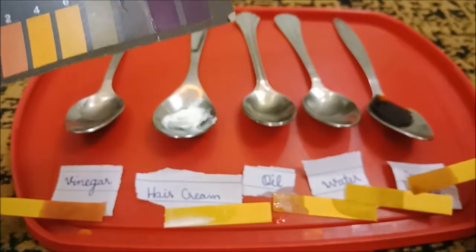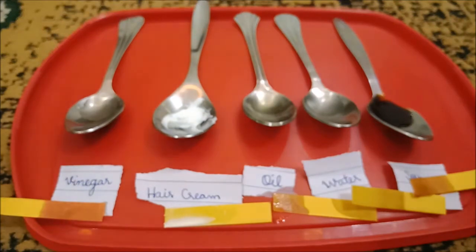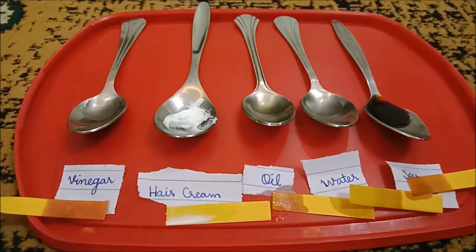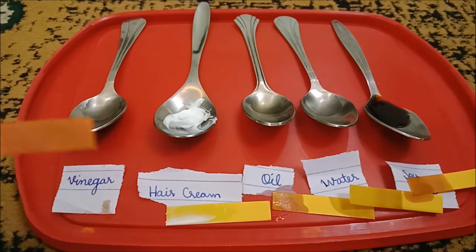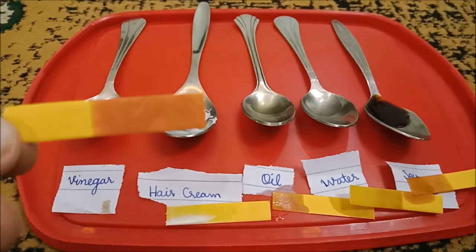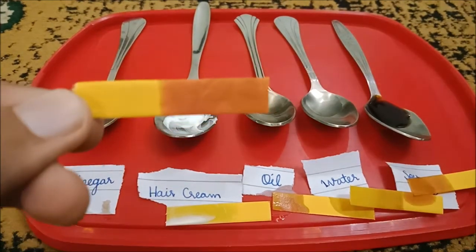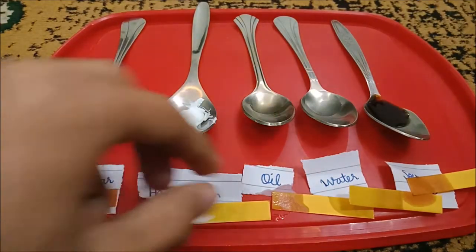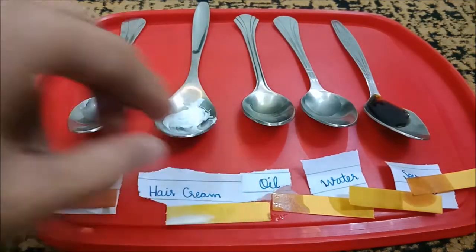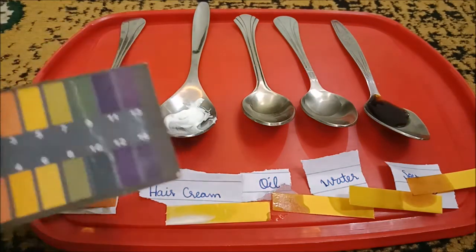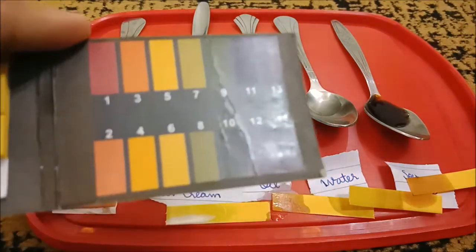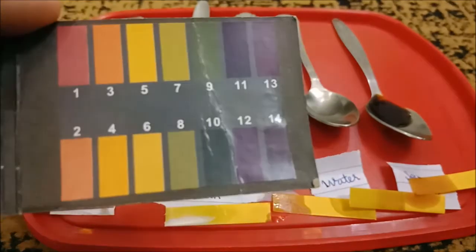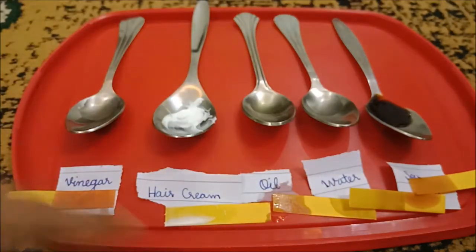So we did like six tests here. The first one was vinegar, which turned into a reddish color. Here it is. After that, the hair cream is actually turning into a green color right now, so maybe it's neutral or it comes into the basic category, like 8 or 9.